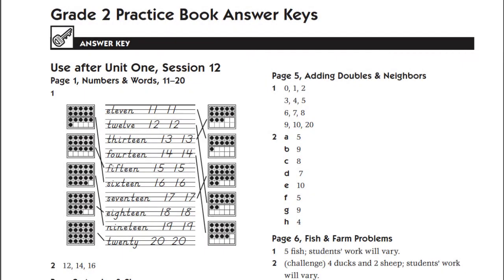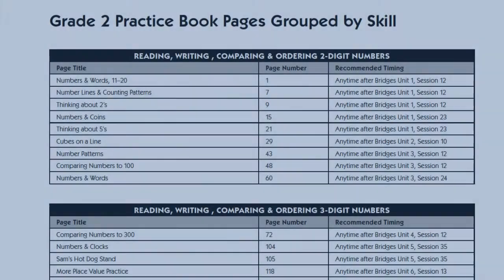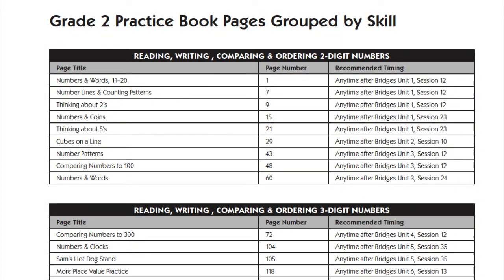At the beginning of each practice book, you'll find an answer key for easy scoring. You'll also find a chart that lists the pages by skill. This will make it easy to choose an appropriate resource for your students. The far right column contains pacing information for Bridges First Edition users.